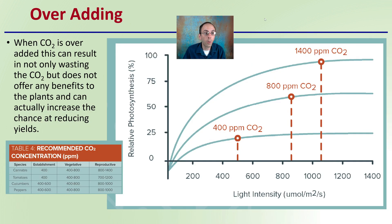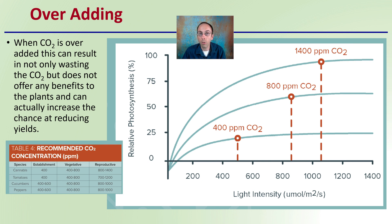When carbon dioxide is over-added, this can result in not only wasting carbon dioxide but it doesn't offer any benefits to the plant. It can actually increase the chance of reducing overall yields. This is why it's a good idea to know the range you're shooting for and make sure you're staying within it — don't go too excessive, and keep in mind that 400 parts per million is atmospheric conditions.